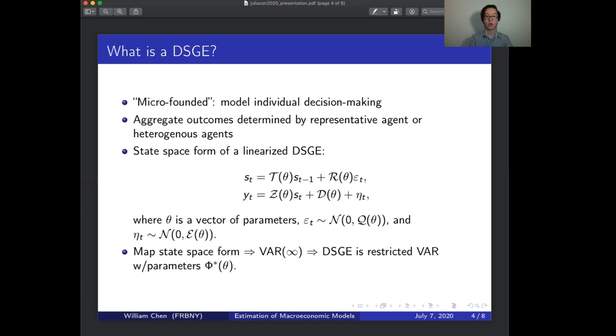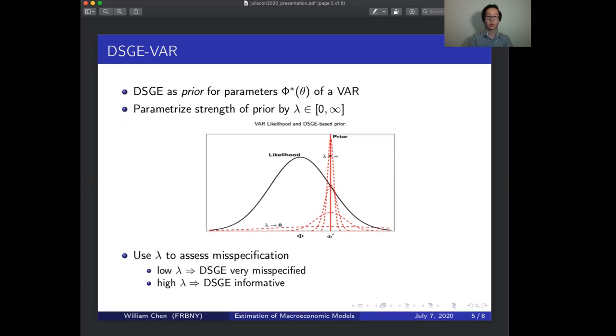A DSGE-VAR, then, uses this interpretation of a DSGE as a restricted VAR with parameters phi star to form a prior for a VAR. So this prior will be parametrized by a hyperparameter lambda, which will range from 0 to infinity. A value of 0 means that you believe that your DSGE has no predicted value relative to a VAR, and a value of infinity means that you think your DSGE is exactly correct about the data. To understand what this means, you can look at this figure on the slide.